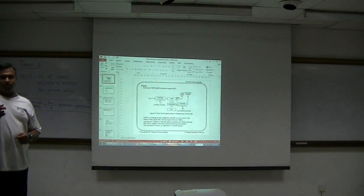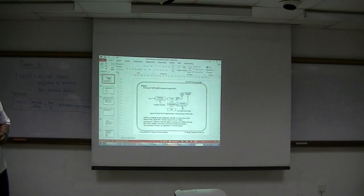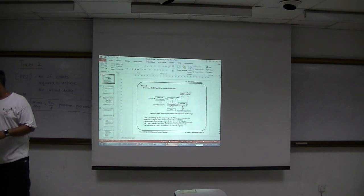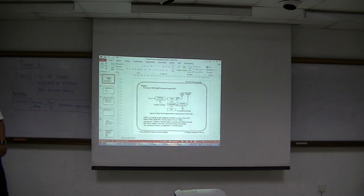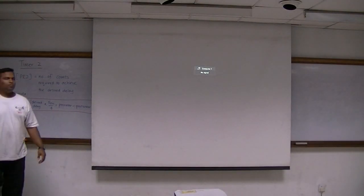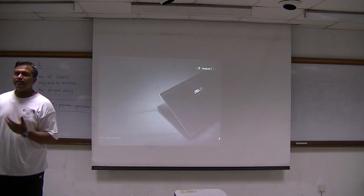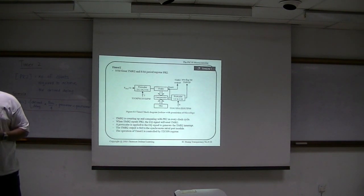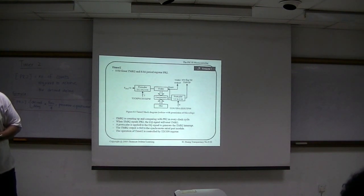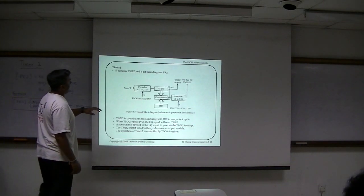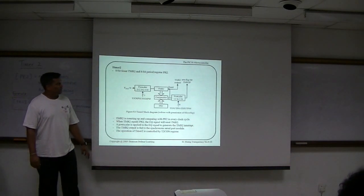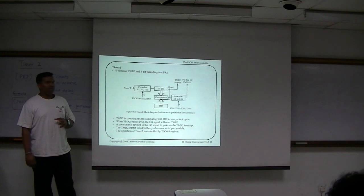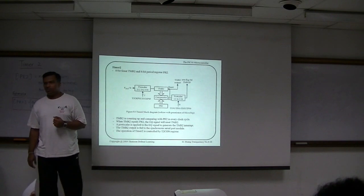Timer 0 and Timer 1 — we have learned how to configure them using a 16-bit timer. The next thing is to take one example of an 8-bit timer, which is Timer 2. This is the block diagram for Timer 2. As you can see, this block diagram for Timer 2 is slightly different from the block diagrams of Timer 1 and Timer 0.